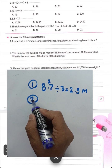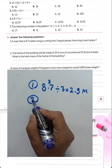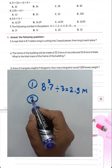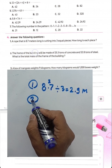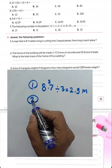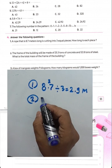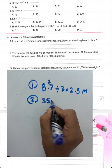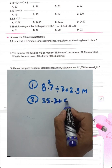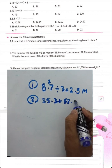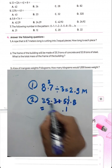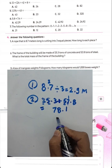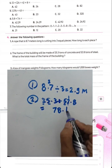Question number two: a building foundation needs 25.3 tonnes of concrete and 52.8 tonnes of steel. The total mass equals 25.3 plus 52.8. 3 plus 8 equals 11, write 1 carry 1; 5 plus 2 plus 1 equals 8; 2 plus 5 equals 7. The total is 78.1 tonnes.